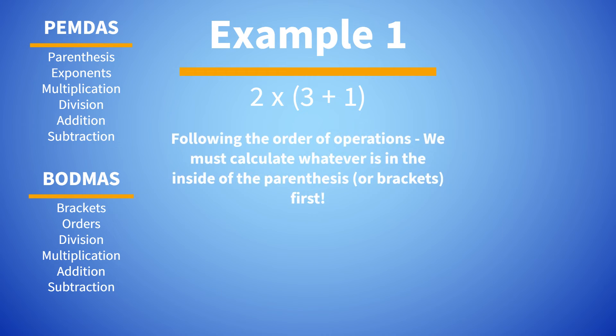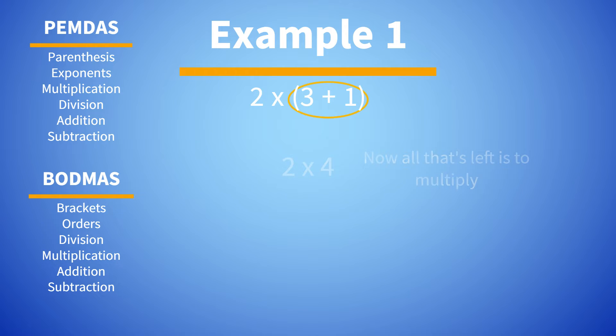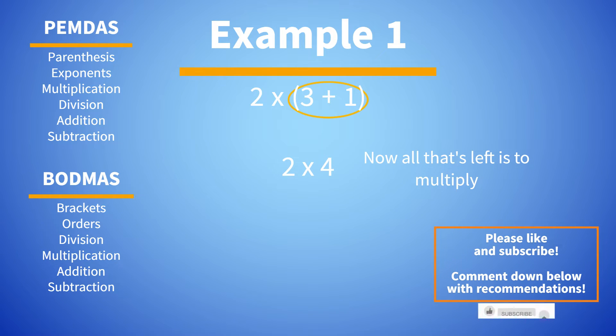Following the order of operations, we must calculate whatever is inside the parentheses or brackets first. Doing that, we add three plus one and get four. Now all that's left is to multiply two times four. Our answer is eight.